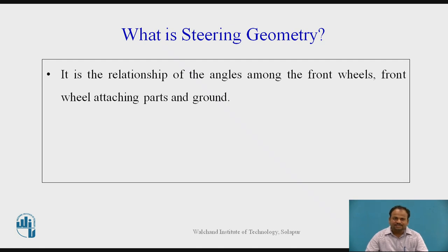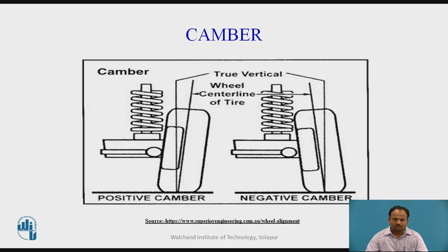Steering Geometry is the relationship of the angles among the front wheels, front wheel attaching parts, and ground. The first type is camber. Camber is the inward or outward tilt of wheels from vertical when viewed from the front of the vehicle. Camber is measured in degrees. On a vehicle, positive camber is adjusted initially, so when the vehicle is loaded and rolling along the road surface, it should run straight up and down with zero camber. This puts the full width of the tire tread on the road surface, which is desirable.